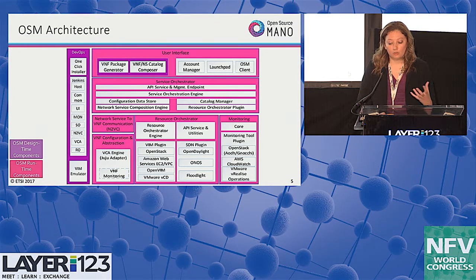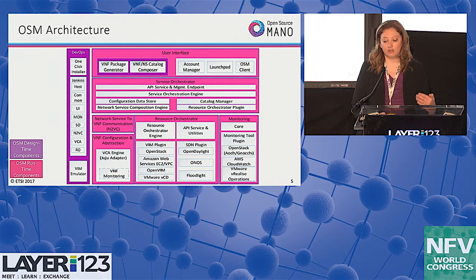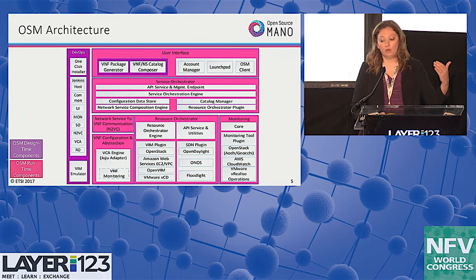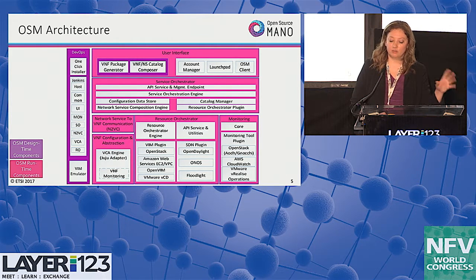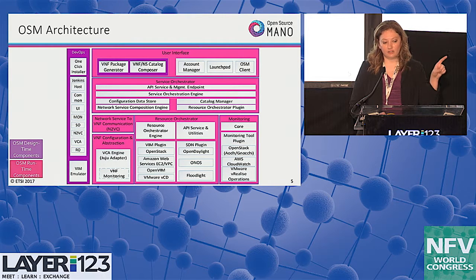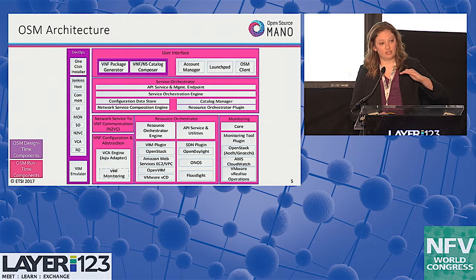Finally, we have our monitoring module — this is our newest module that's been added. In here we aggregate and build plug-ins into different monitoring and telemetry solutions so that we can pull telemetry not only from the infrastructure layer or from all of the various VIMs and SDN components, but also leave the APIs open so that we can build plug-ins into the VNF layer as well. We're currently working on bridges to build that integration so we can get application layer telemetry from the N2VC component directly into our monitoring module, giving us a full stack view of telemetry from infrastructure to application to network service.